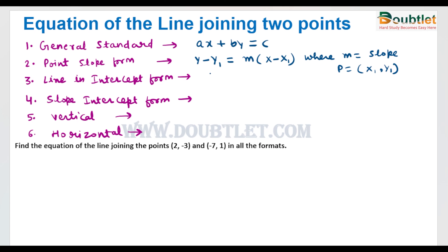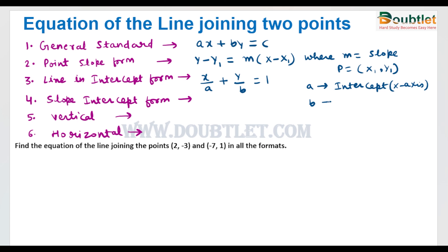Another form of a line is the intercept form. This means the two intercepts on the x-axis and y-axis of a line are given. We can write the equation of the line as x over a plus y over b equals 1, where a represents the intercept on the x-axis and b represents the intercept on the y-axis.